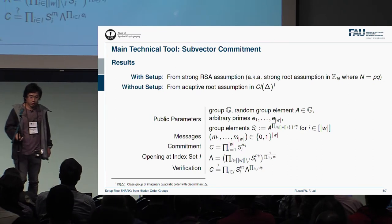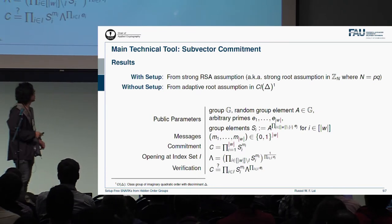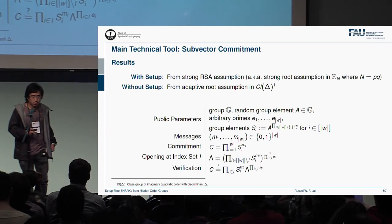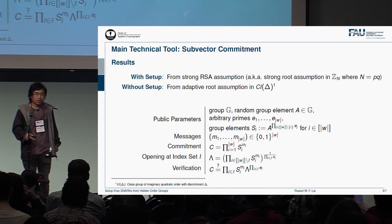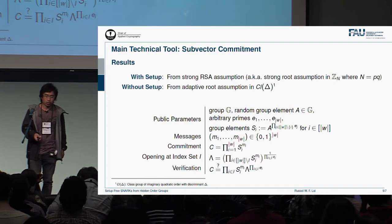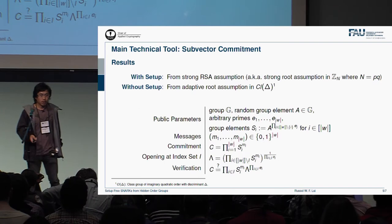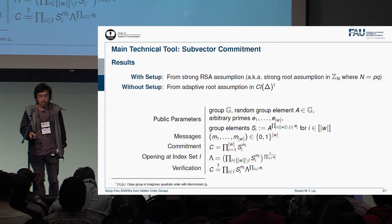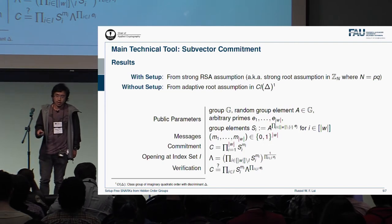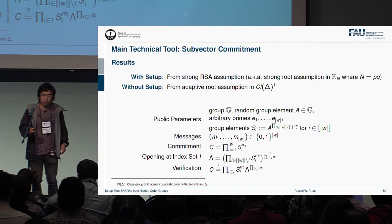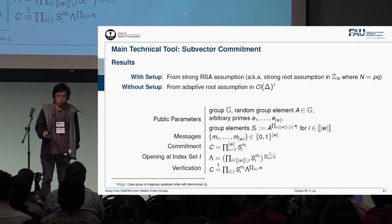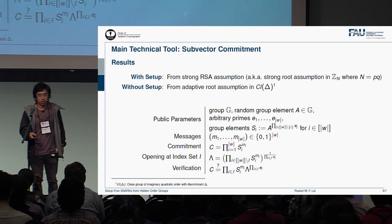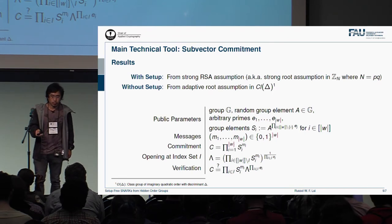The construction is actually quite simple — simple enough to fit into a slide. We also get a result in a setting with setup. In that setting, we can instantiate our construction from just strong RSA, but in the without-setup setting, we need to rely on the adaptive root assumption, which is a rather new assumption, in class groups of some imaginary quadratic order. This assumption in this group was recently used to construct verifiable delay functions or time-lock puzzles.